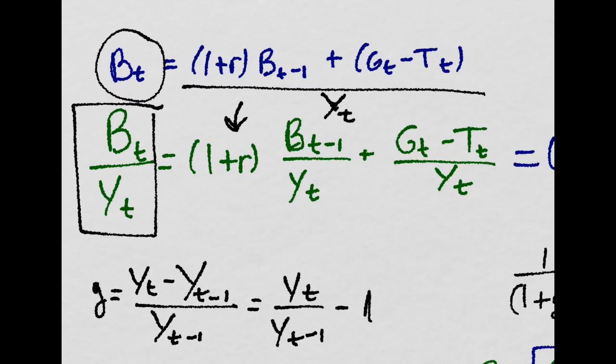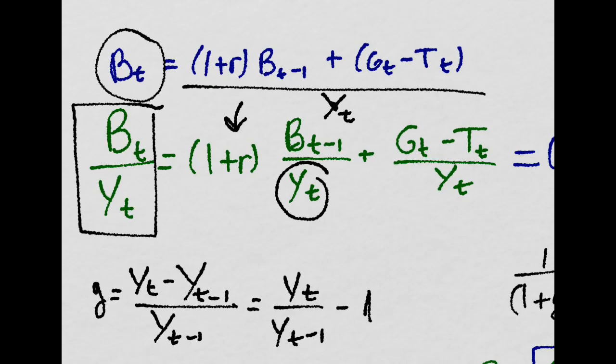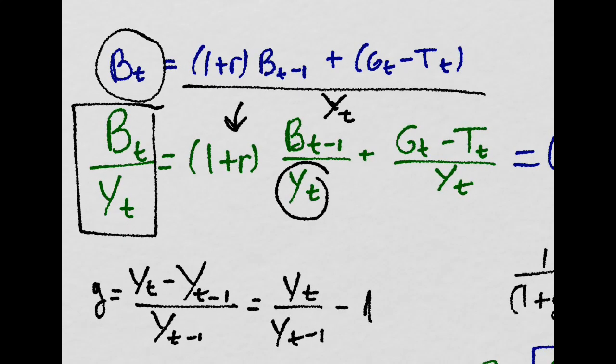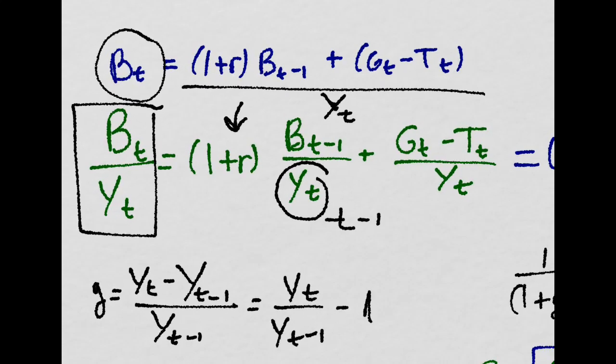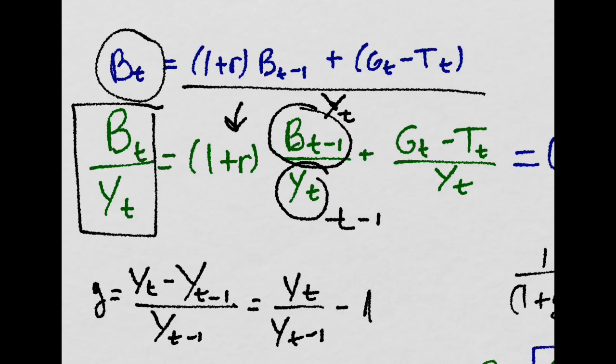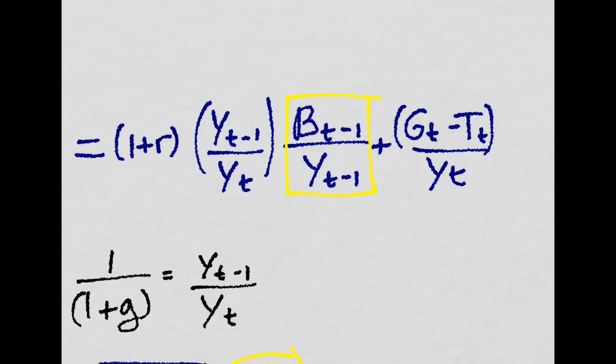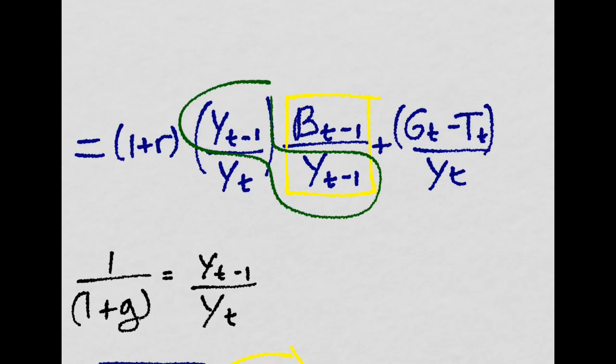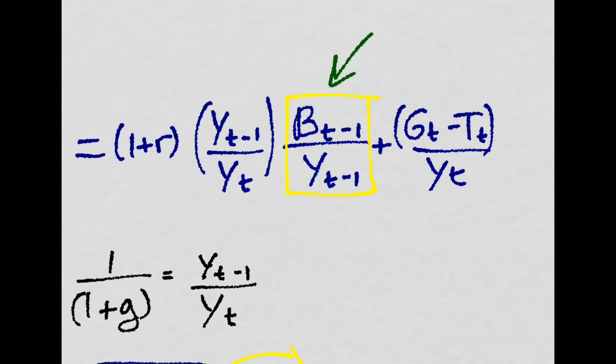But we don't want to have here GDP at year T. We want to have it at the level of T minus 1 in order to be able to compare with this. So we just multiply by 1. We multiply by this, which is just equal to 1, obviously. And we have here what we want, the debt to GDP ratio at T minus 1.